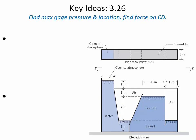The first problem that I think is a little bit complex is this one. It's a special assembly that's been designed, and it's got three different fluids in it: water, air, and then some other fluid with a specific gravity of 3.0. What they're asking in this problem is where is the pressure going to be the highest inside of this whole system, and they also want to know what is the pressure pushing up on this plate CD, which is a 1 meter by 1 meter plate.